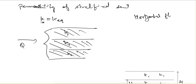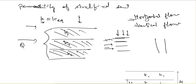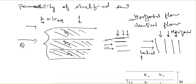There are two cases of flow: horizontal flow and vertical flow. Here, horizontal and vertical do not mean the actual direction of flow — it means the flow is either parallel to the stratification or perpendicular to the stratification. If the flow is parallel to the stratification, it is horizontal flow; if it is perpendicular to the stratification, it is vertical flow.